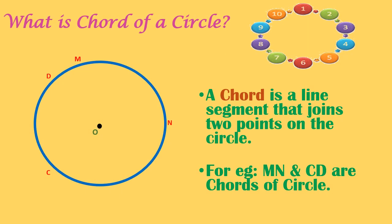What is a chord of a circle? A chord is a line segment that joins two points on the circle. For example, MN and CD are chords of the circle.